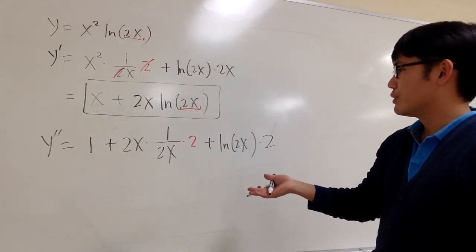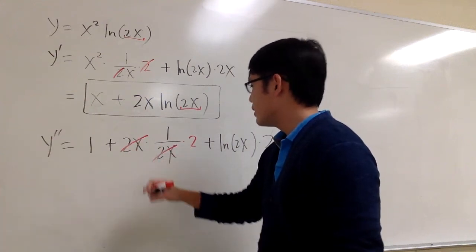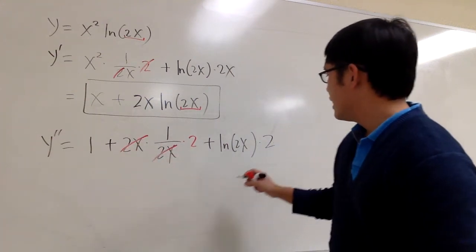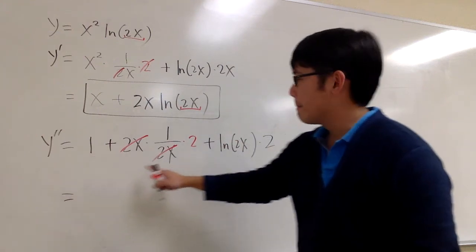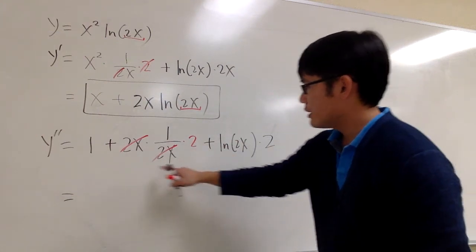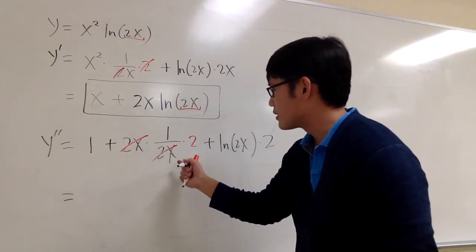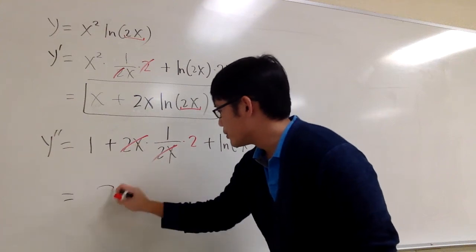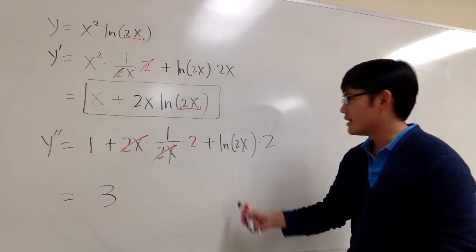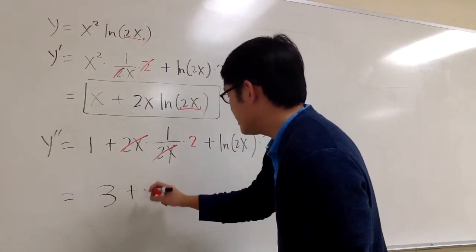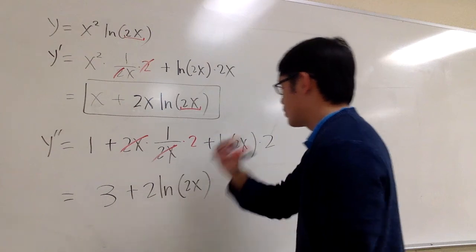And once again, this will be pretty much all we have. 2x and the 2x cancel each other out. And here, I'm talking about 1 plus 2, right? 1 plus 2. That's all we have at this moment. The first two parts. 1 plus 2 is equal to 3. And then for this part, we can put the 2 in the front. So I can just say, let's add 2 ln of 2x.